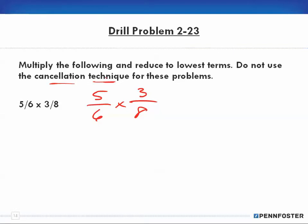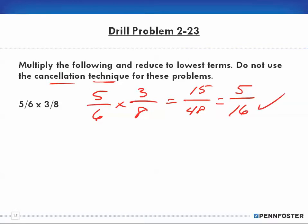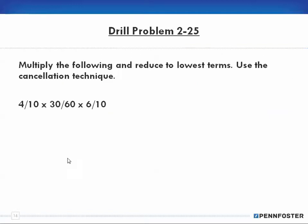So five times three is 15, and six times eight is 48. We can reduce that because three can go into 15 five times and three can go into 48 sixteen times. We can't reduce 5/16 anymore, so that's our answer: five-sixteenths. Alright, problem 2-25: multiply the following and reduce to the lowest terms, but this time use the cancellation technique.